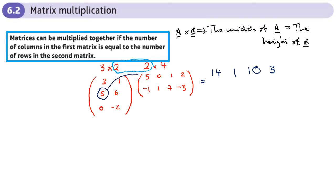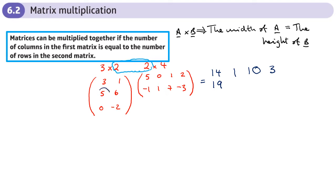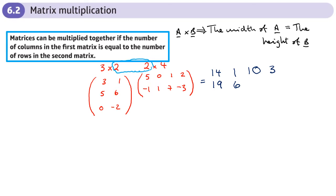Now I move down to the second row. I do 5 times 5 and 6 times negative 1, which goes in the first column, second row: 25 minus 6 = 19. Then 5 times 0 plus 6 times 1 = 6. I think you get the idea now.